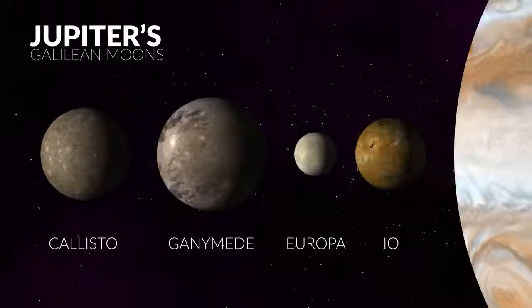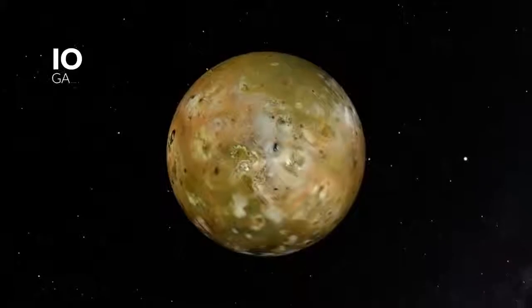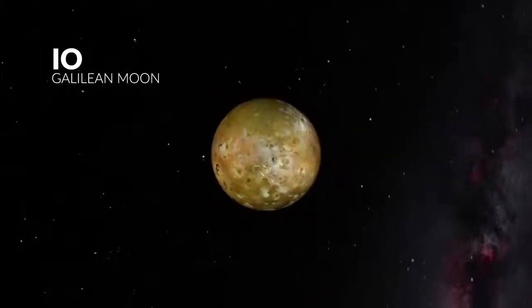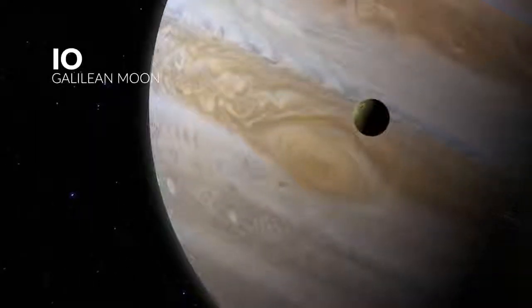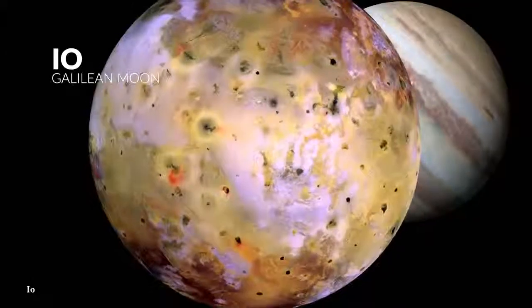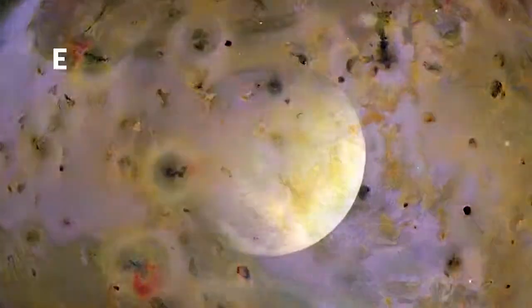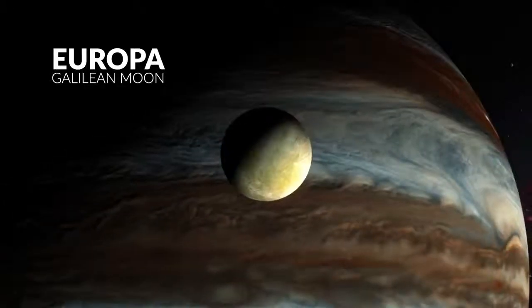The extreme diversity of all the moons can easily be seen in these four examples. Io is a violently active moon with the greatest amount of volcanic activity in the whole solar system. Some of its volcanoes spew gases and vapors hundreds of miles above its surface. On the other hand, Europa is a world that is encased under a frozen surface.